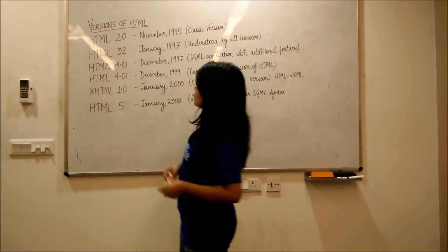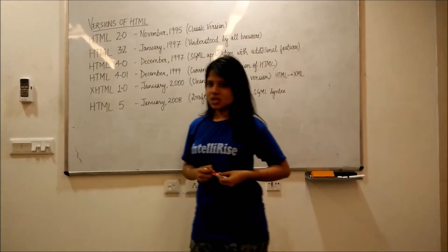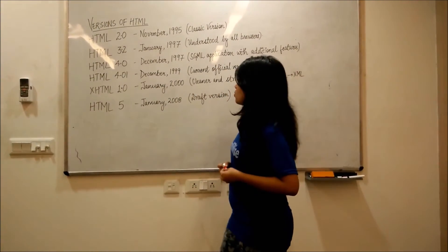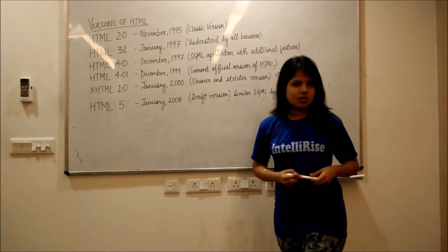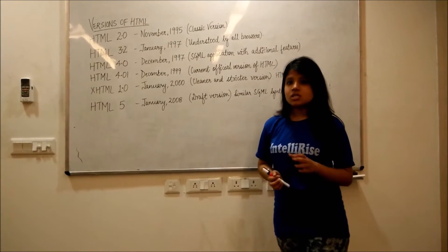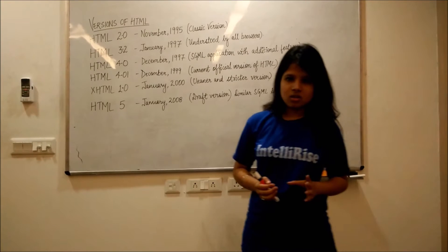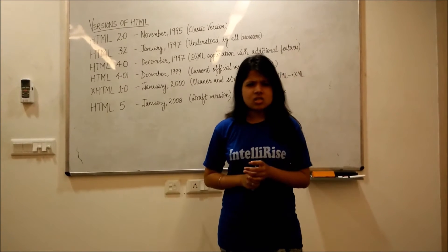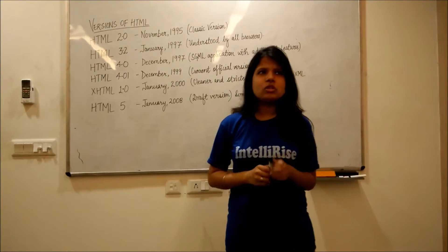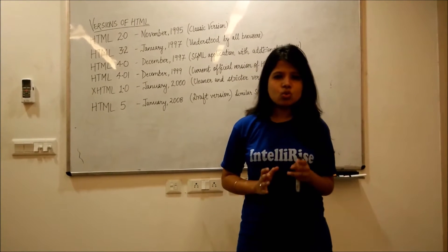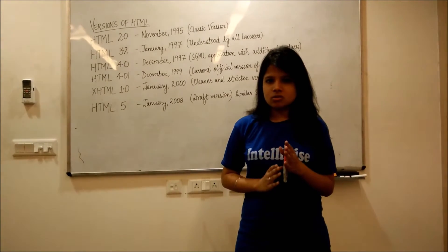First, we had the version of HTML 2.0, which was released in November 1995. It is a classic version of HTML. In this, we had a lacking point — we were not able to align all the attributes in a proper manner.